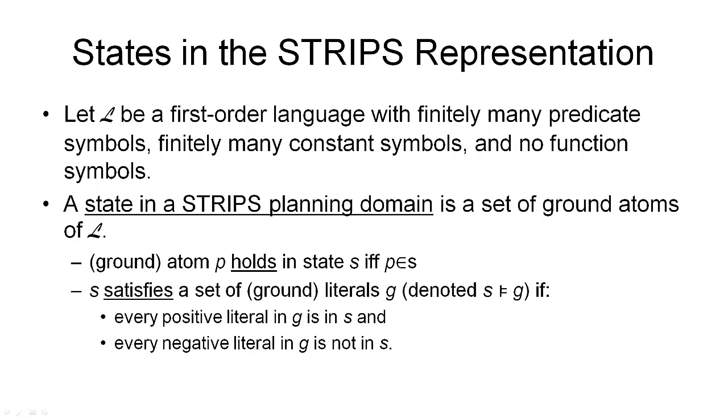Now, here is a formal definition of what a state in the STRIPS representation actually is. So, we start off with a first order language L, and in this language, we have finitely many predicate symbols. These are the symbols we've just seen how to define them in PDDL. We also have finitely many constant symbols. These are the symbols representing the individual objects in our domain. And we have no function symbols, and we haven't defined any function symbols.